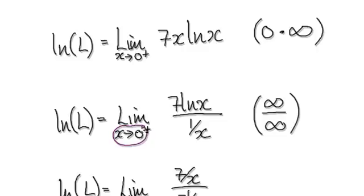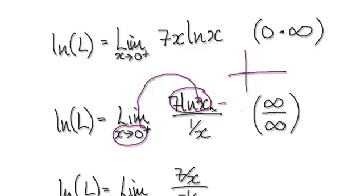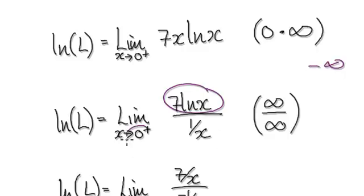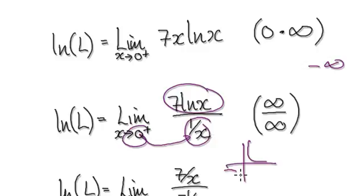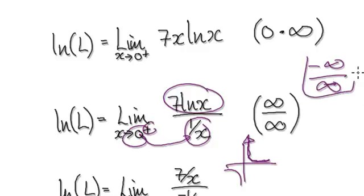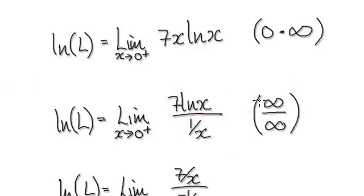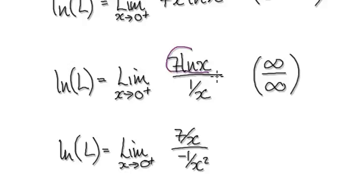So let's evaluate it now. As x tends to zero, this thing here — the natural log — will be negative infinity. As x tends to zero, one over x: the graph of one over x, as x tends to zero from the right-hand side, is shooting to positive infinity. So when it comes to L'Hôpital's rule, we can consider this as a case of infinity over infinity, even though there's a negative here. Now we've got a case of infinity over infinity, so we can apply L'Hôpital's rule.